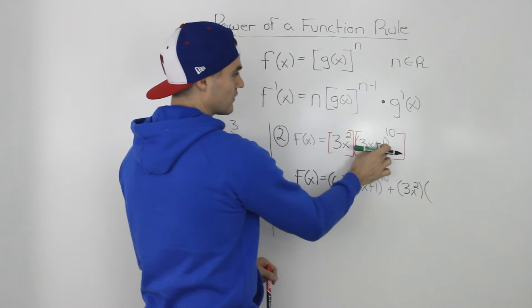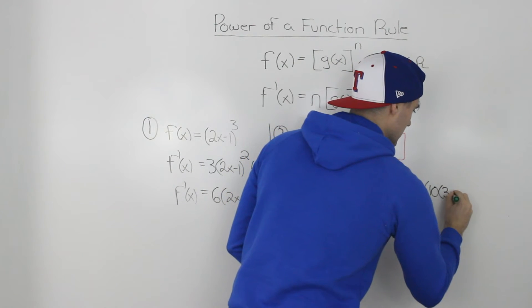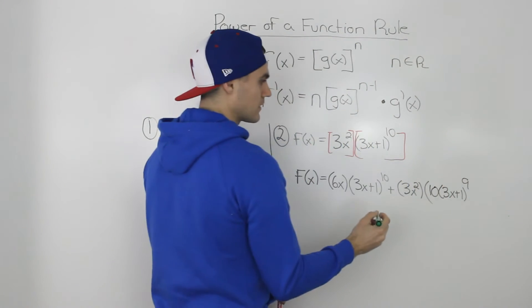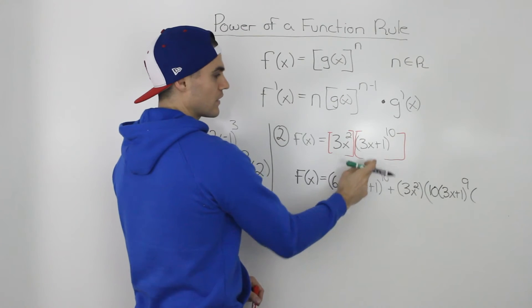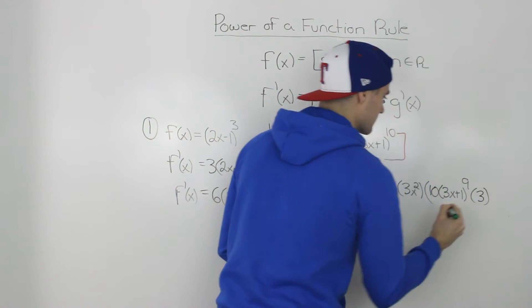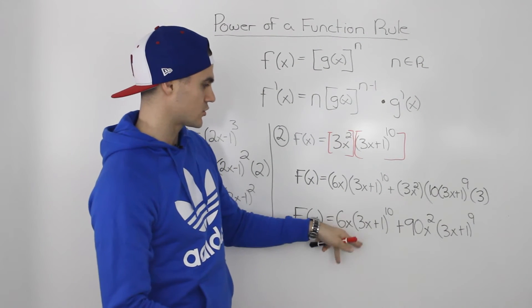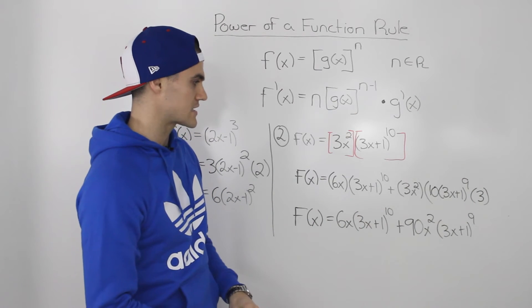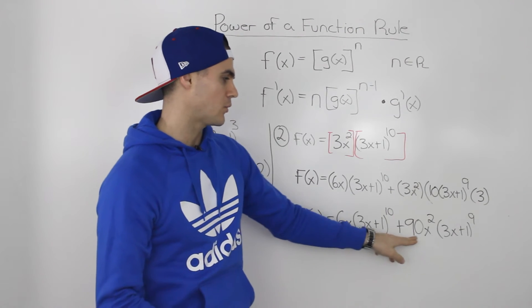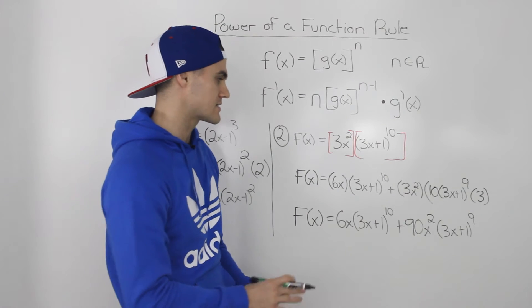To find the derivative of that, we bring the 10 down, keep the function in the bracket the same, subtract 1 from the exponent to get 9, and then multiply by the derivative of the inner function. The derivative of 3x + 1 is just 3. Now we can continue to simplify — the 6x·(3x + 1)^10 we leave as is, and here we can multiply the 3, the 10, and the 3x², which gives us 90x², and then (3x + 1)^9 stays as is.